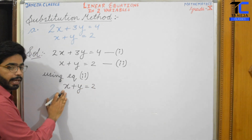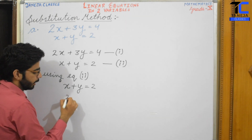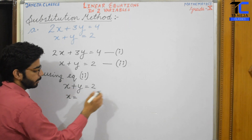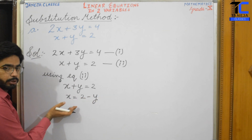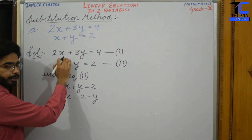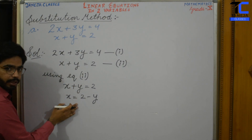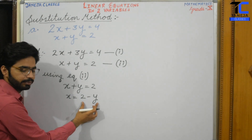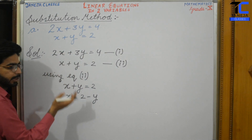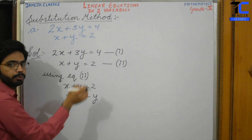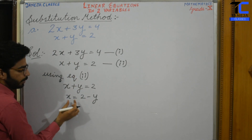From equation 2, x plus y equals 2, we can take out the value of either x or y. I am taking out the value of x. Taking plus y to the other side, it becomes x equals 2 minus y. Now this value of x, that is 2 minus y, we can use in equation 1. This process is known as substitution.